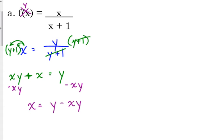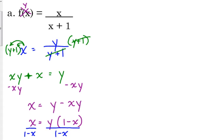Now we have two y's that we can't combine, but we can factor out a y. Taking y out of both y and -xy gives us x = y(1 - x). To get y by itself, divide both sides by (1 - x). So my inverse function is x / (1 - x).